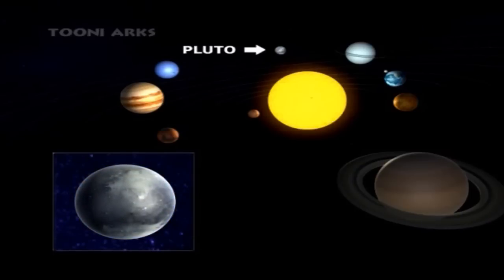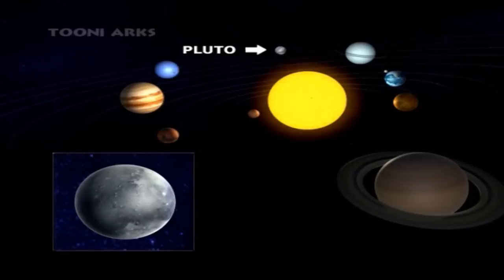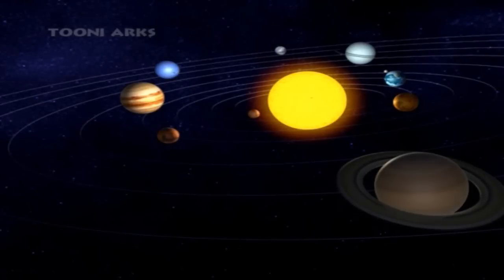This is Pluto. It was known as the ninth planet in the solar system but has recently lost its status as a planet. But of course, it is still part of the family. Did you all enjoy knowing about our solar system children?